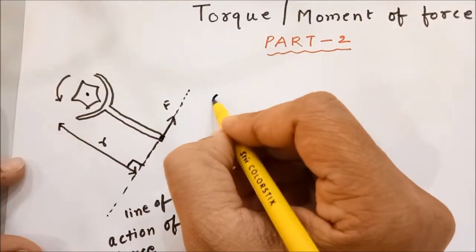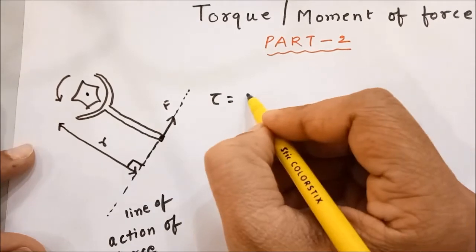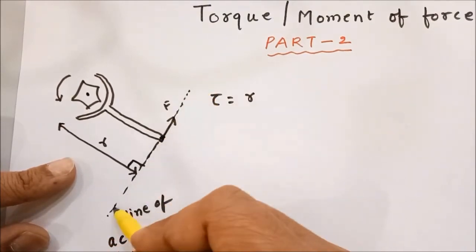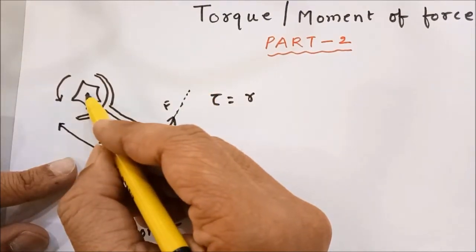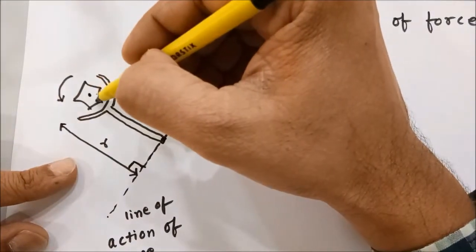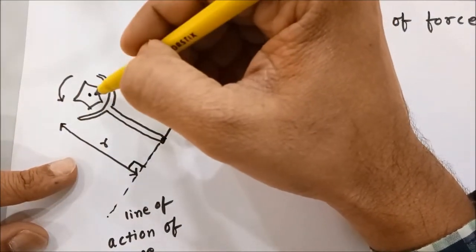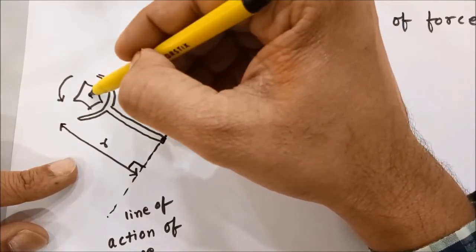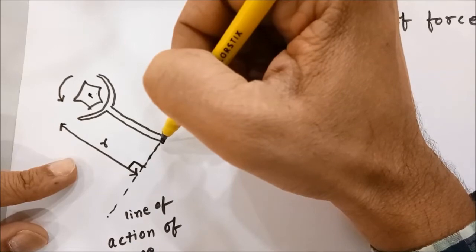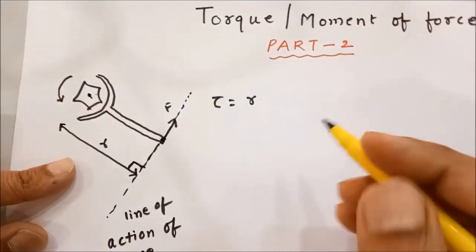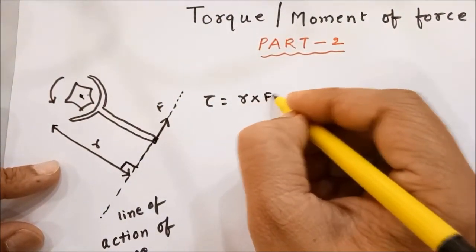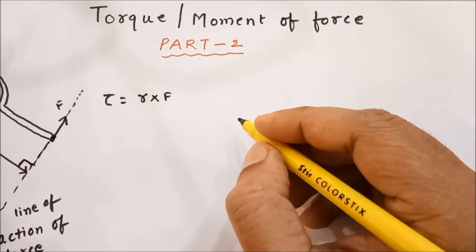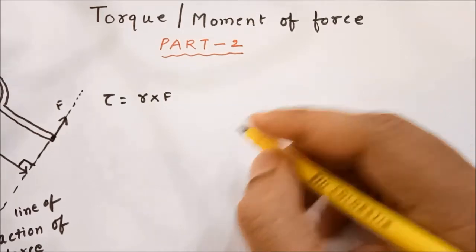So torque is equal to r, which is the perpendicular distance from the line of action of force to the axis of rotation. This r is the perpendicular distance from the axis of rotation to the line of action of force. So torque is equal to r multiplied by F. Now let us consider a situation in which we are applying a force in some different direction.